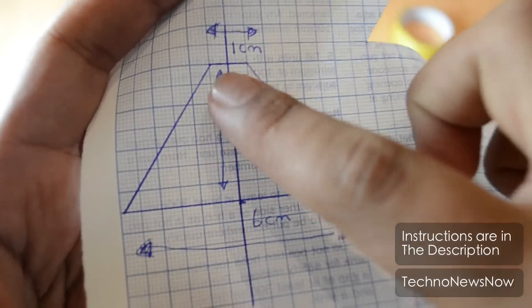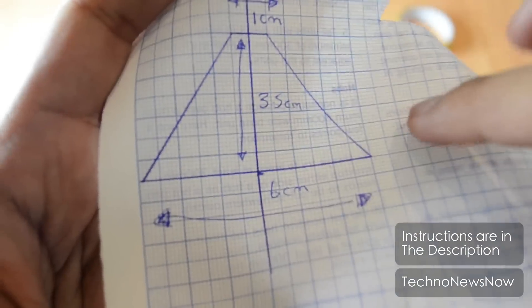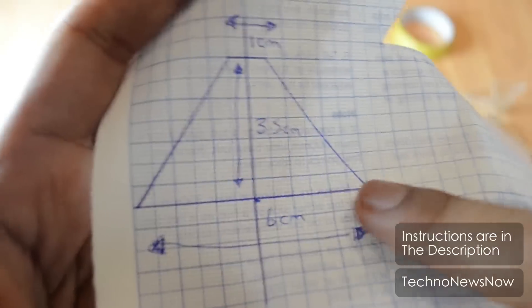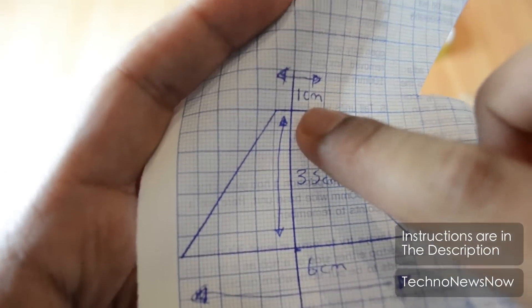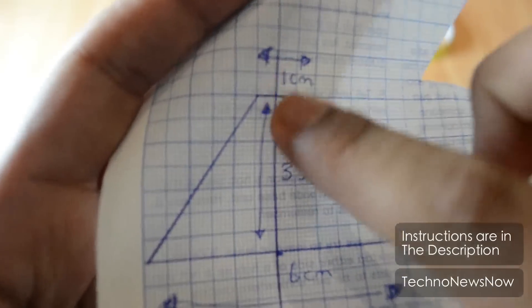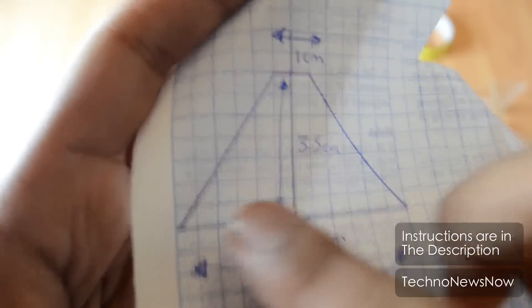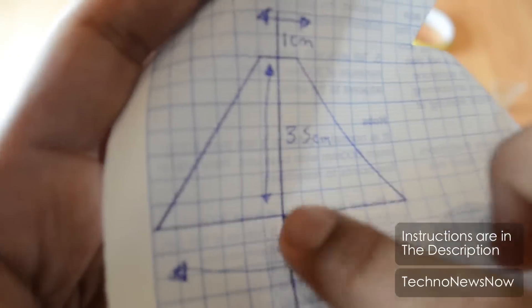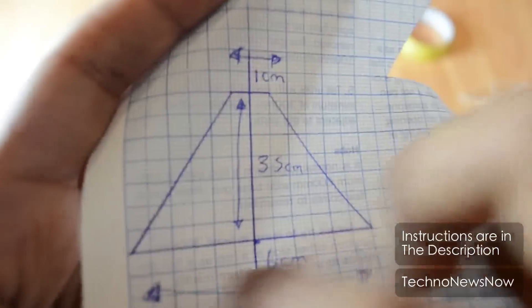So you want one centimeter top, 3.5 centimeters down, six centimeters is the length. Then go ahead and draw the sides. So you want to copy these exact measurements if you can, and if you want to experiment you can go ahead and double these or even triple these. Try not to change the measurements that much.